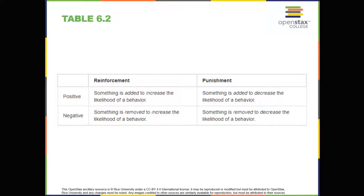In negative punishment, you remove a pleasant stimulus to decrease the behavior. For example, when a child misbehaves, a parent can take away a favorite toy. In this case, a stimulus, the toy, is removed in order to decrease the behavior.